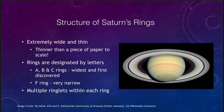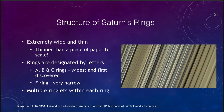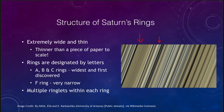If we zoom in on the rings, we can see all kinds of structures — little gaps and areas where there are a lot more particles, brighter areas. When you think about it, within each of these are just billions of particles all orbiting around Saturn. So why do they have this detailed structure? We'll come back and look at that shortly.